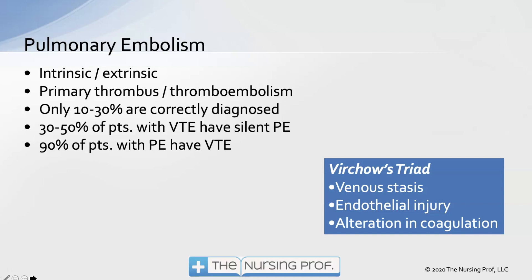Venous stasis means the blood is not moving properly. If a patient has shock and a low perfusion state, they'll have venous stasis. If a patient has vascular issues like varicose veins in the legs, that also increases venous stasis. Any time venous blood is not moving properly back to the heart, we could have venous stasis, which predisposes the patient to developing a clot.